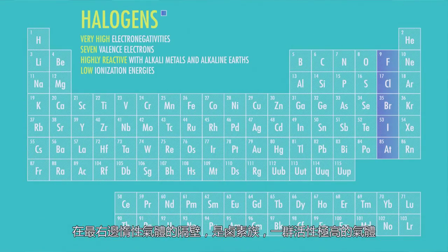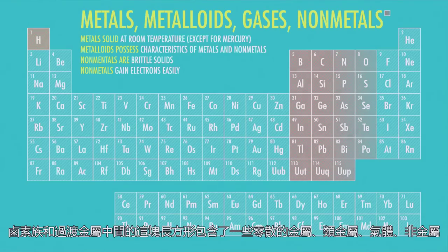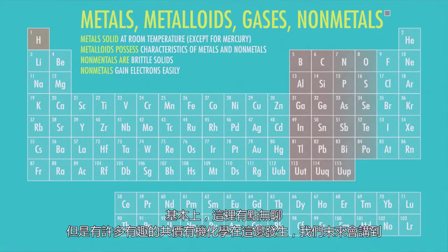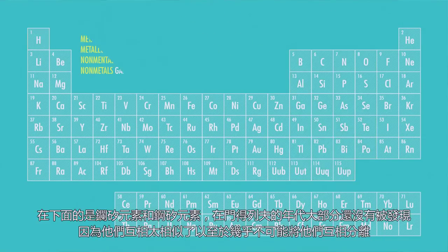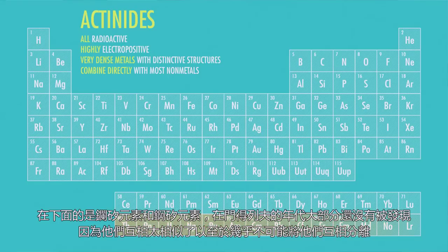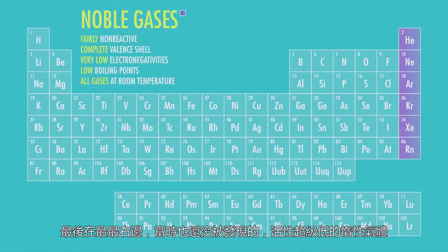On the far right, just over from the noble gases, the halogens make up a set of extremely reactive gases that form negative ions or anions with one negative charge, and love to react with the alkali and alkaline earth metals. The rectangle between the halogens and the transition metals contains a peculiar scattershot of metals, metalloids, gases, and non-metals. These guys don't end up as ions unless you take extreme action. Down below in their own little island are the lanthanides and actinides, metals largely undiscovered in Mendeleev's day because they're so similar that it's next to impossible to separate them from each other. And finally, on the far, far right, also undiscovered when Mendeleev built his chart, the completely unreactive noble gases.